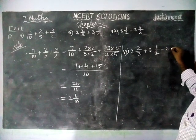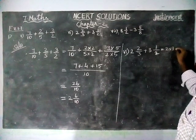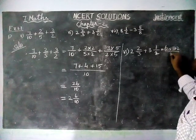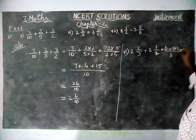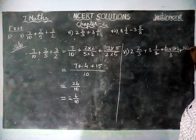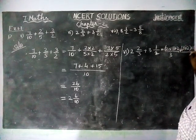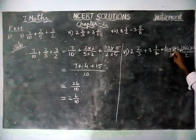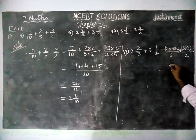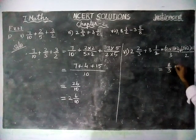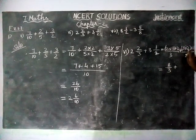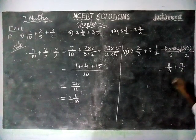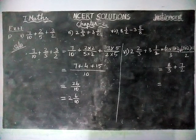2 and 2/3: that is (2 × 3 + 2) / 3. Plus 3 and 1/2: that is (3 × 2 + 1) / 2. So 2 threes are 6, plus 2 equals 8/3. And 3 twos are 6, plus 1 equals 7/2. Now the denominators are different, so we have to convert into the same denominator.